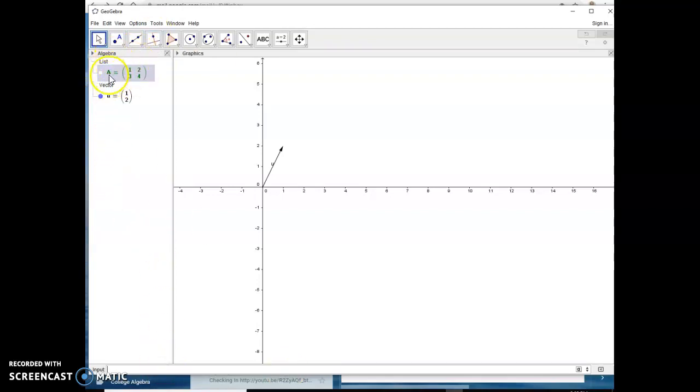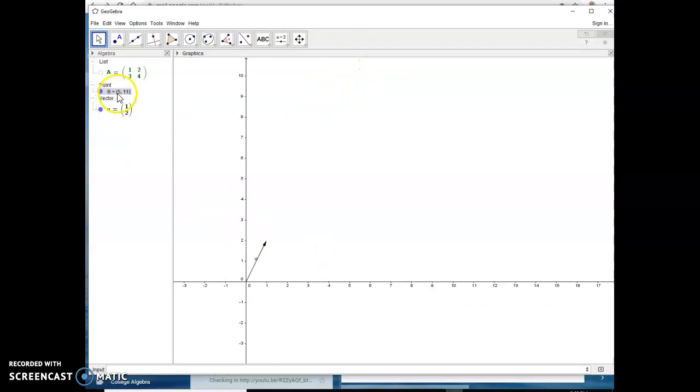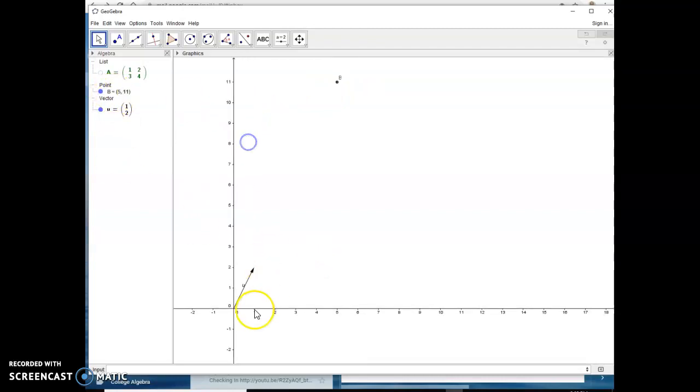So now I can do something like I can multiply A times u. So if I do A times u, notice that I get an answer, but it gives me a point. It gives me the point 5, 11, which is a point up here, but I want to actually create another vector. I want this to be a vector form. I want this to be an arrow pointing from the origin to the point B.